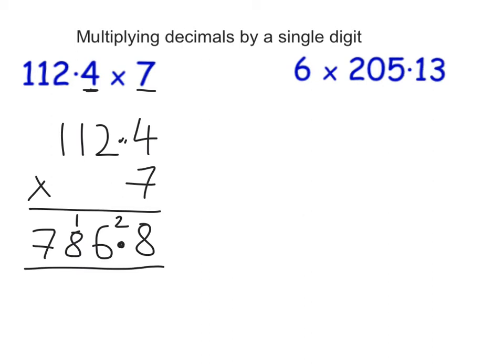Let's look at the next question. We've got it written the other way around: 6 times 205.13. I'm still going to set it out so that I have the decimal number at the top and the single digit at the bottom. So I'm going to times everything by 6 this time.